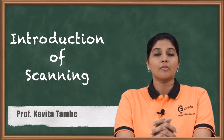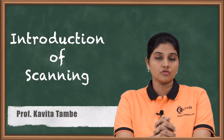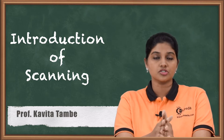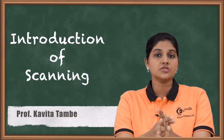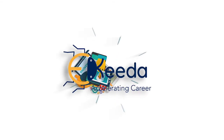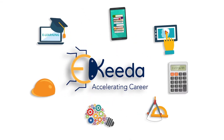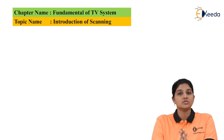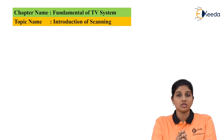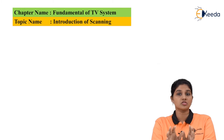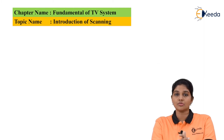In this video we are going to talk about one of the important concepts in television systems, whether it is monochrome or color, and that is scanning, which is used for generating pictures on the screen. Scanning is considered an important process in both color and monochrome television systems. Let's have a look at what scanning actually is, the different types of scanning, and how scanning takes place in a television system.